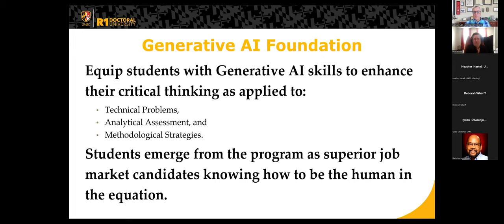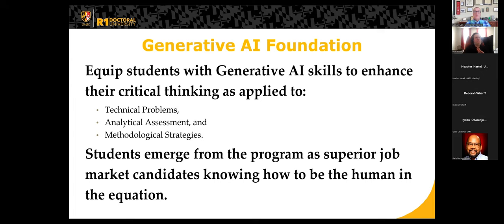In the end, our students emerge from the program as superior candidates, knowing how to be the human in the equation. A lot of the rumors out there say Gen AI is going to replace this, but the research isn't showing that. The research is showing that employers want candidates to know how to use it, but they also want them to know how to be the human in it, because we're recognizing the human is still needed. So our systematic program is driven by the research that's out there and informs us which way to go.